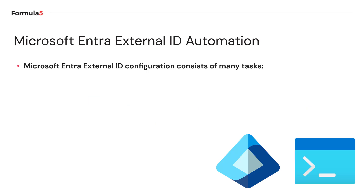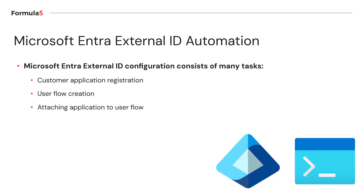Microsoft Entra External ID configuration consists of many tasks. There can be customer application registration — every time we want to integrate a new application with Microsoft Entra External ID, we have to create app registrations in Entra Admin Center. Once we have an app registration, we would like to create sign-up and sign-in pages, called user flows. We have to create a new user flow, and once it's created, we have to attach the application to the user flow.